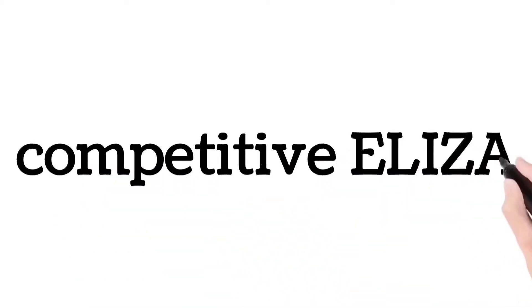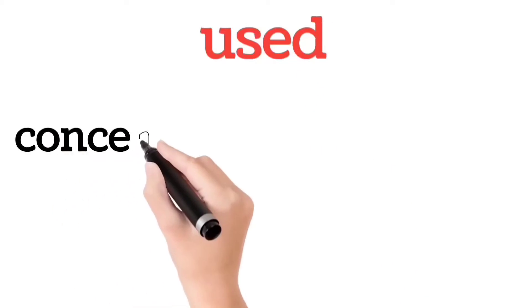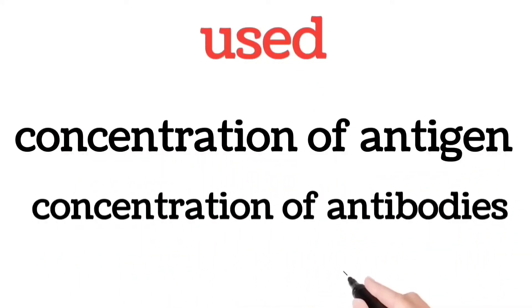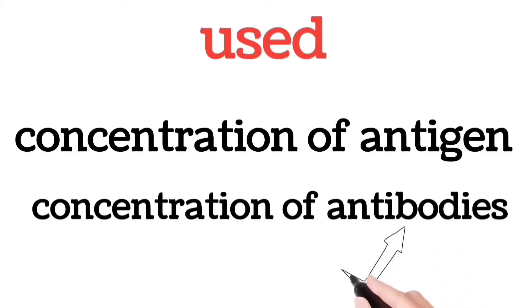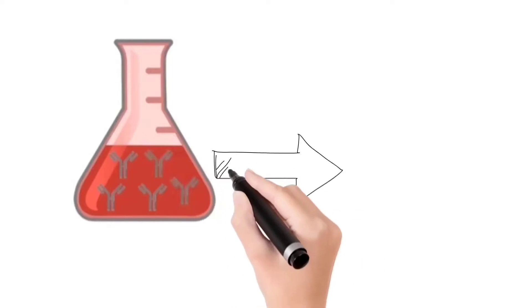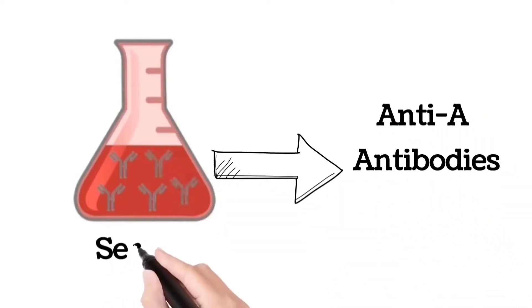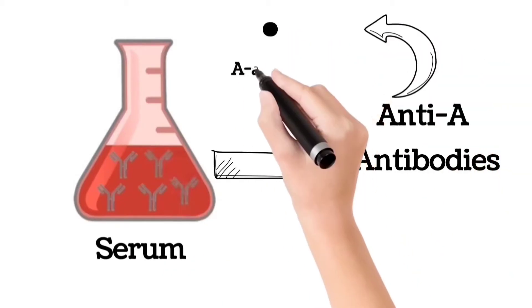Competitive ELISA is used to determine the concentration of antigen or antibodies in a particular sample. Suppose we have to determine the concentration of anti-A antibodies from a serum sample — that is, antibodies that specifically bind to the A antigen.